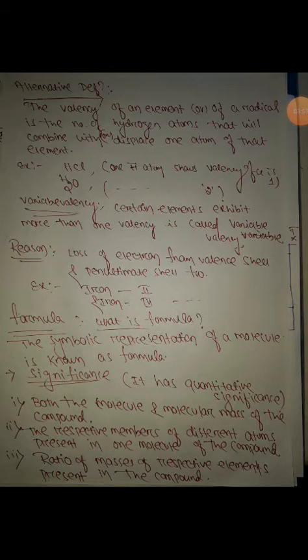The reason is loss of electrons from the valence shell or the penultimate shell. That's why it's called variable valency. Iron is two and iron is three. This is the part of variable valency.